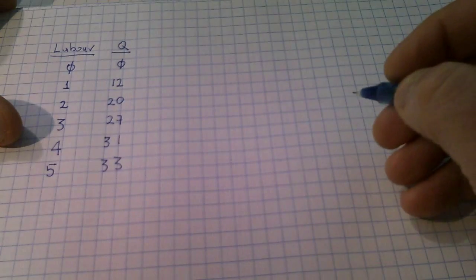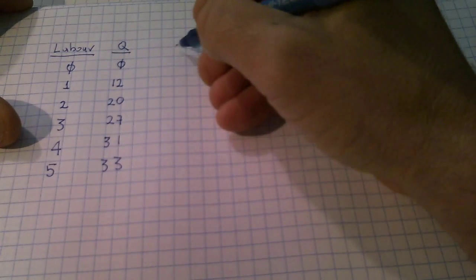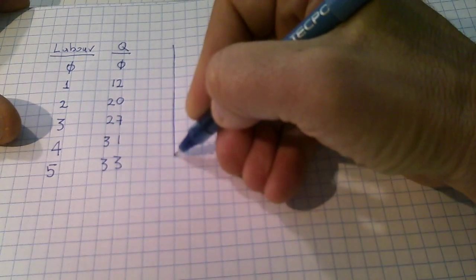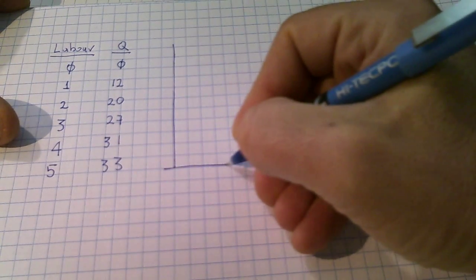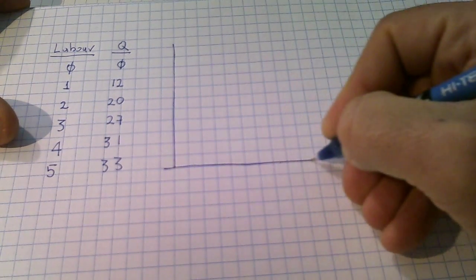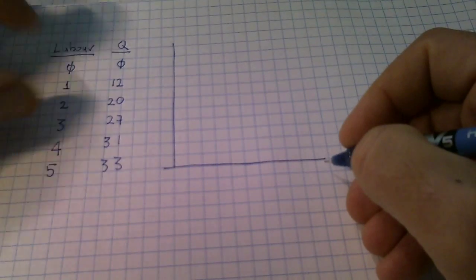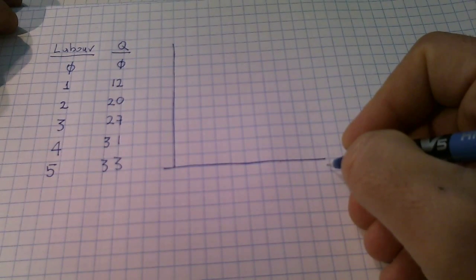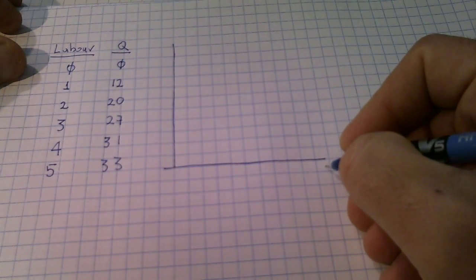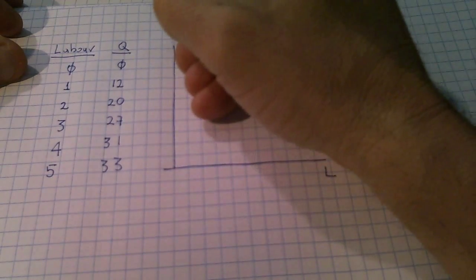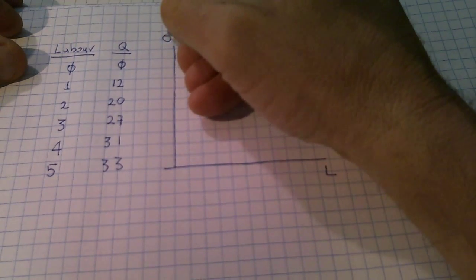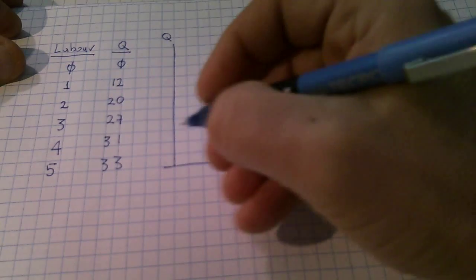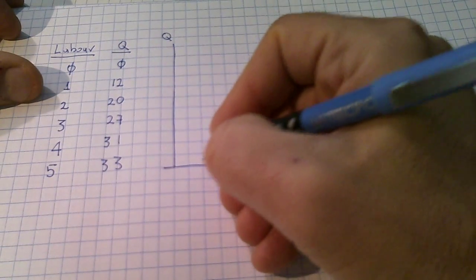What the students tend to see is that — in my other section there were some increasing returns initially — but they see the law of diminishing returns. So if you put labor on the horizontal axis and production (Q) on the vertical axis, then what you tend to see is a pattern across one, two, three, four, and five units of labor.